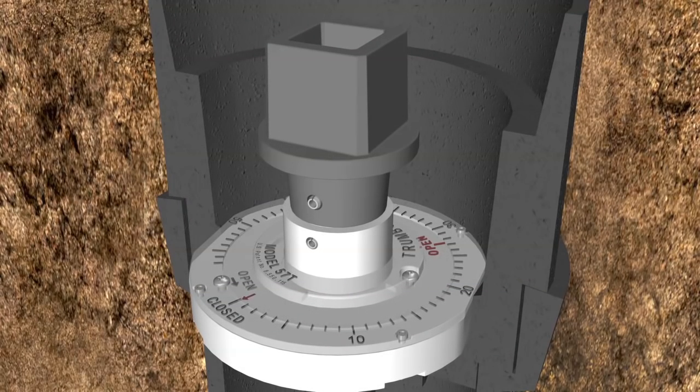Next, ensure that the cast iron housing is properly seated in the valve box. Seat the position indicator in the housing adapter. Make sure the 2 flats on the position indicator are captured between the 2 matching shoulder flats in the housing adapter. This is to prevent the position indicator base from rotating while operating the valve.